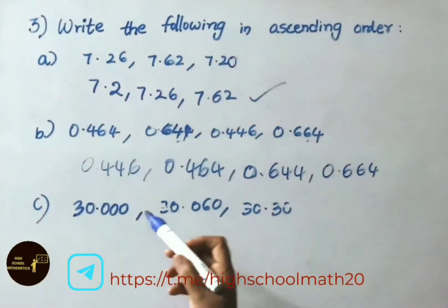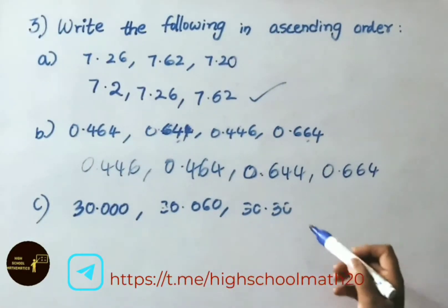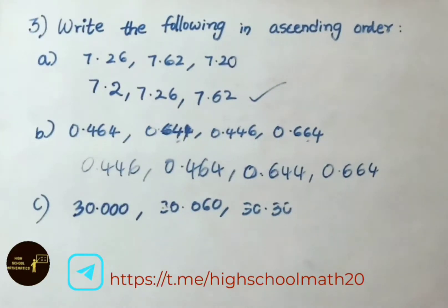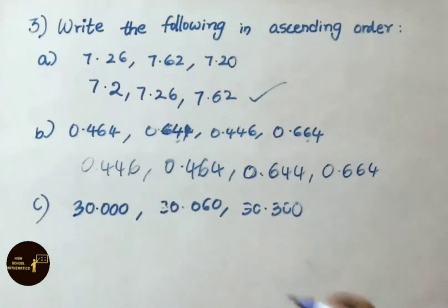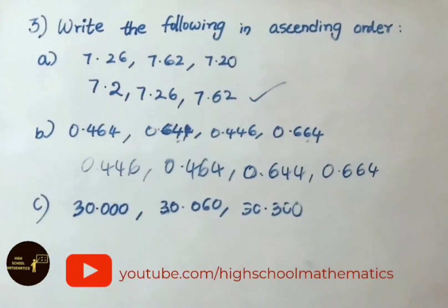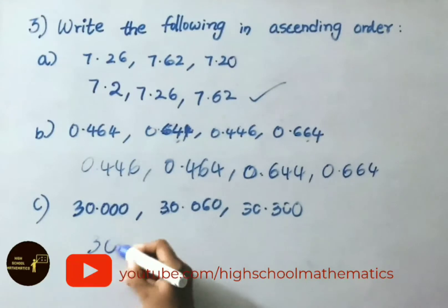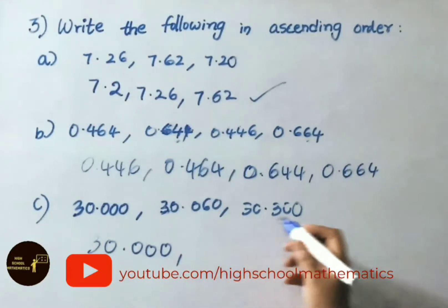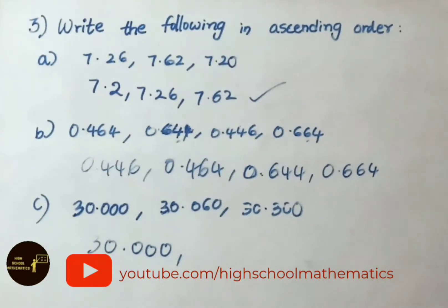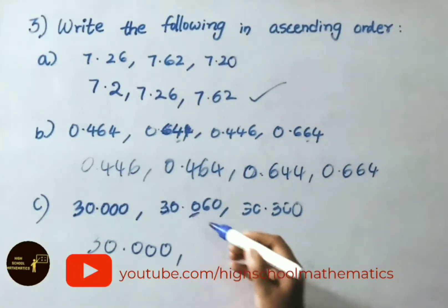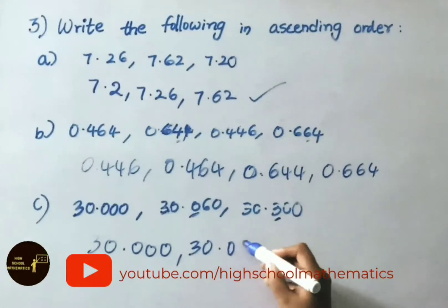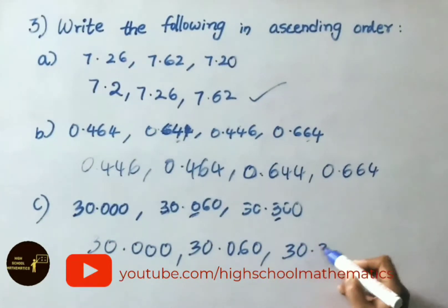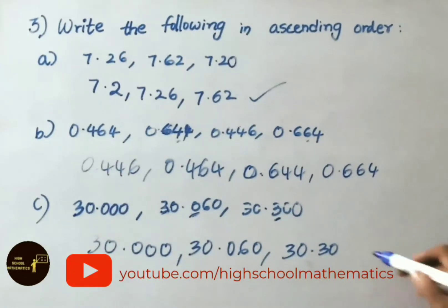See part C: 30.000, 30.060, and 30.30. The last number has only 2 decimal places, so place a 0 to get 30.300. Now all are like decimals. The smallest is 30.000. Comparing 30.060 and 30.300 — the tenths place is 0 versus 3, so 30.060 is smaller. Ascending order: 30.000, 30.060, 30.300.